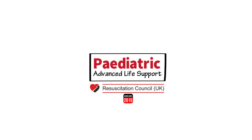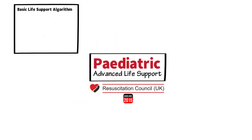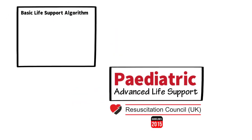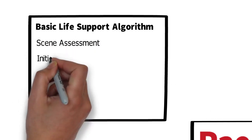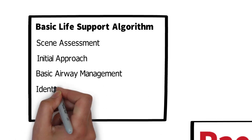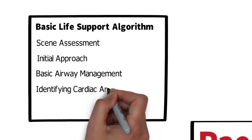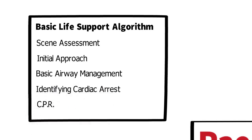To do that we'll build on the paediatric BLS algorithm which we have examined previously. In broad terms that consists of scene assessment, initial approach, basic airway management, identifying cardiac arrest and CPR. In this session though we're going to build on that basis and examine the extra components of ALS.